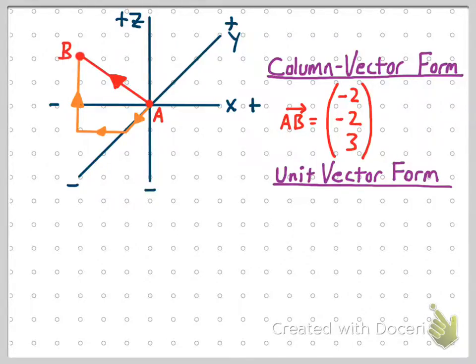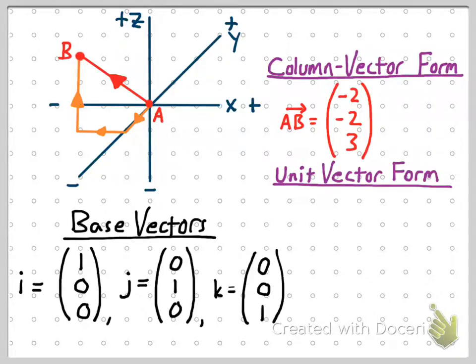Now, just like there was a base vector i and j in two dimensions, there are base vectors i, j, and k in three dimensions. And I'll write their components for you real quick. So vector i goes one unit in the positive X direction, but no units in the Y or Z directions. Vector j goes one unit in the positive Y direction, but nowhere in the X and Z. Vector k goes one unit in the positive Z direction, but nowhere in the X and Y directions.